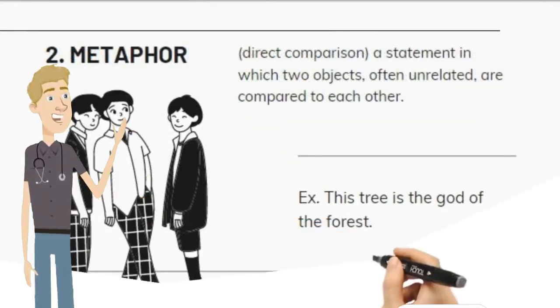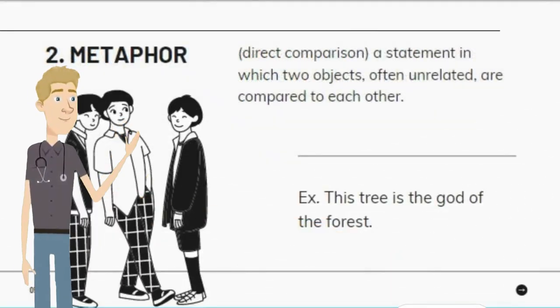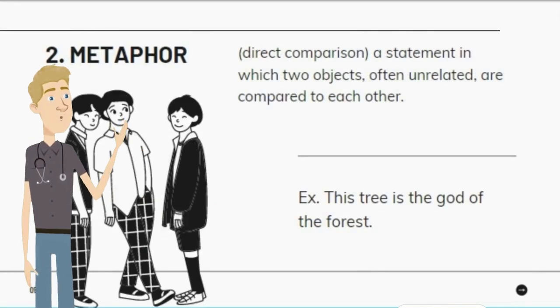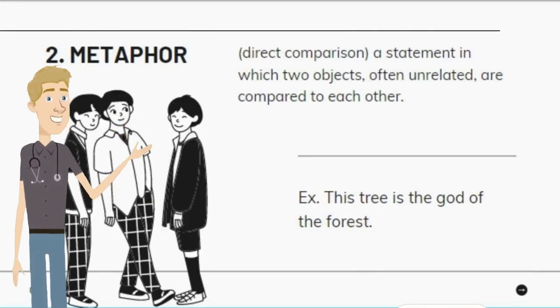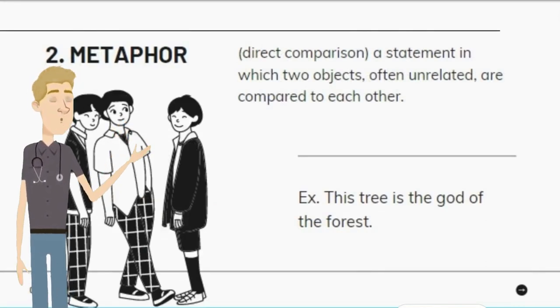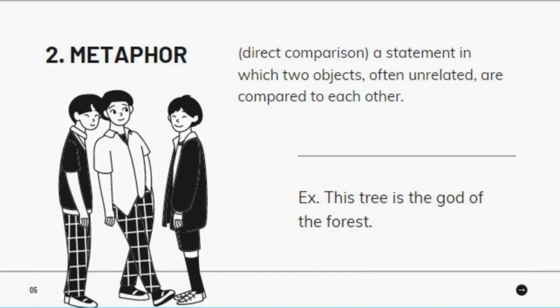2. Metaphor — Direct Comparison. A statement in which two objects, often unrelated, are compared to each other. Example: This tree is the god of the forest.